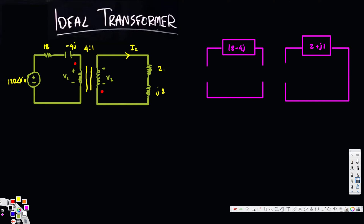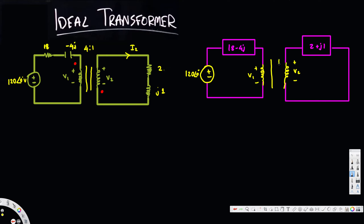We have a voltage source of 120 at zero degrees, and this is our inductance with plus and minus V1. Here we have V2 plus minus, and this is an ideal transformer — this sign represents an ideal transformer.